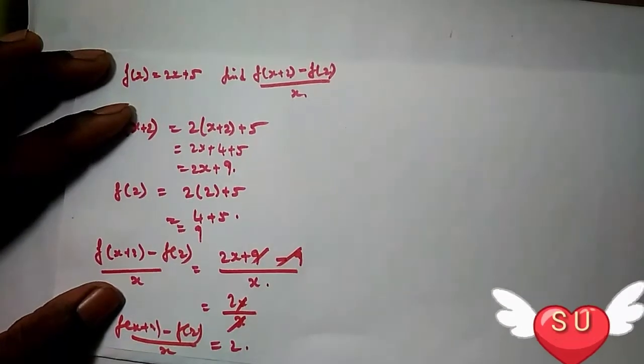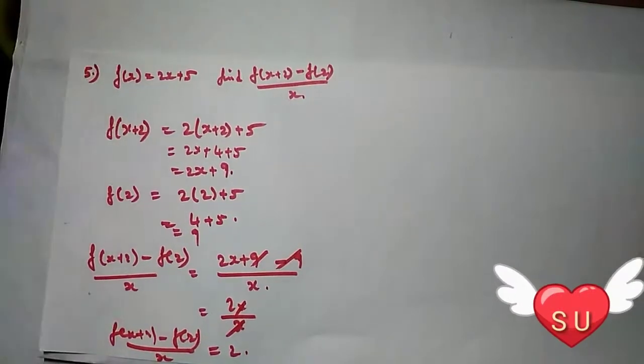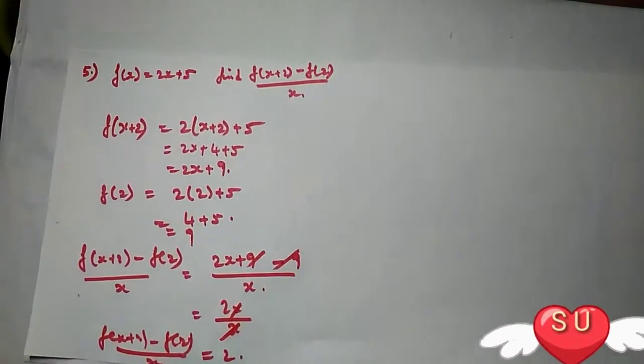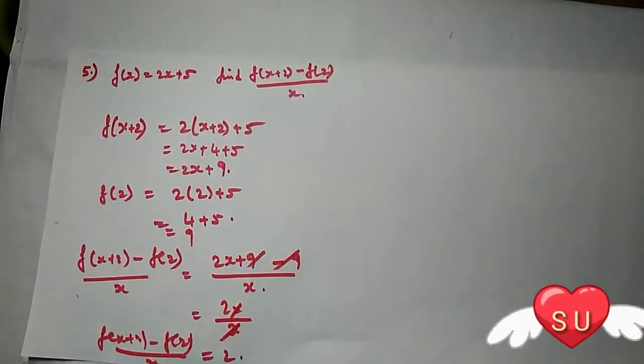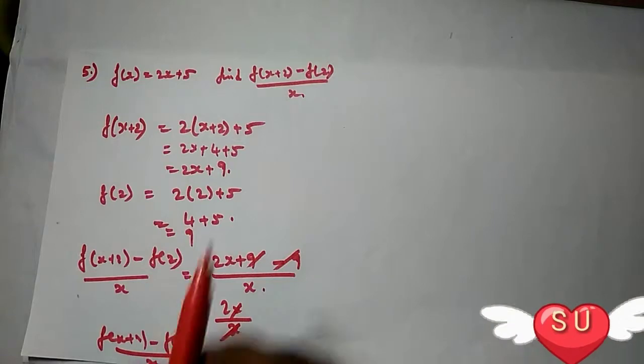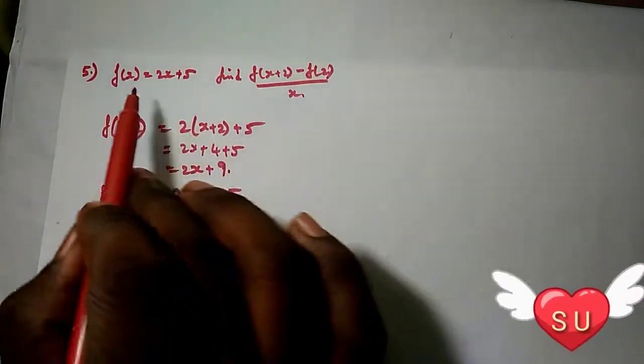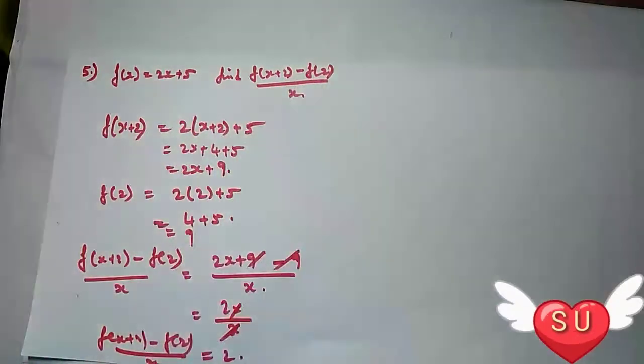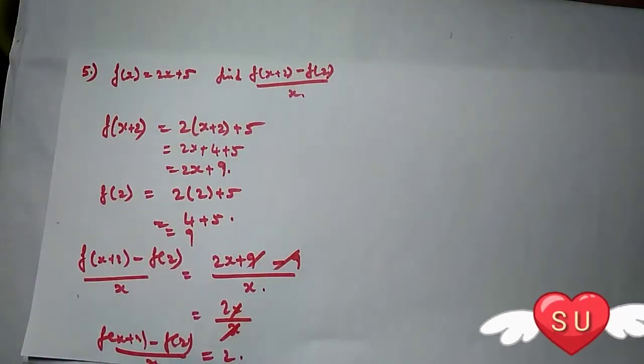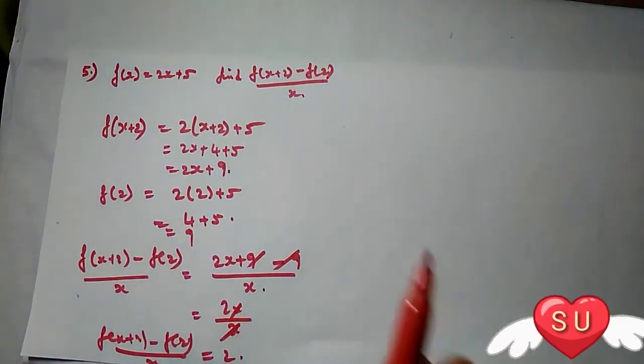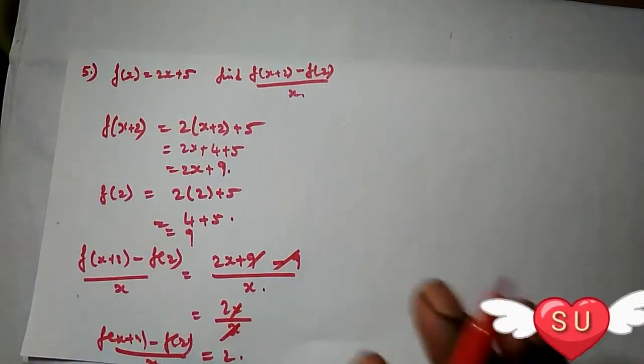Therefore, f(x+2) - f(2) divided by x equals 2. That is your answer, friends. This sum is easy — understand it step by step.